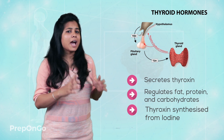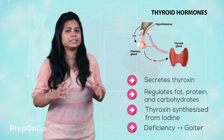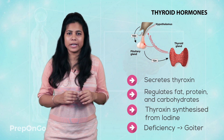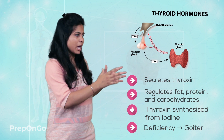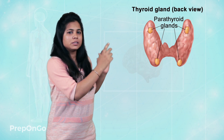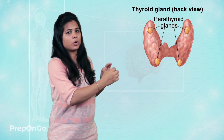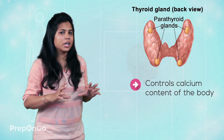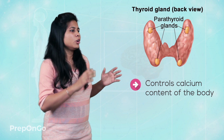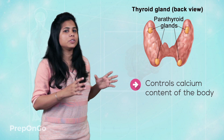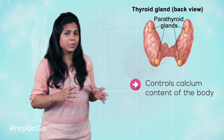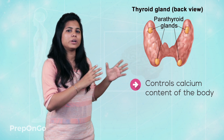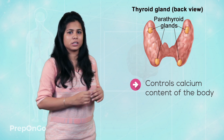Lack of thyroxine causes a disease called goiter, whose symptom is a swollen neck. Behind the thyroid gland is the parathyroid gland. This parathyroid gland is responsible for the calcium content of the body. It secretes a hormone that regulates the calcium content of the bones and teeth — that means, how much calcium goes to the bones and teeth is controlled by the parathyroid hormones.